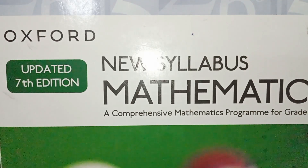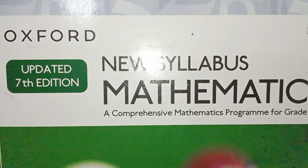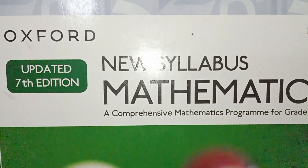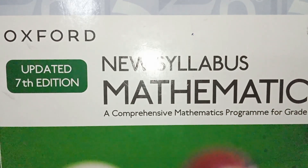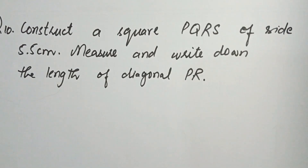This is the updated seventh edition of Book D3, and today we will do Exercise 11b from question number 10 to 13. Let's start. Question number 10: construct a square PQRS of side 5.5 centimeters, measure and write down the length of the diagonal PR.